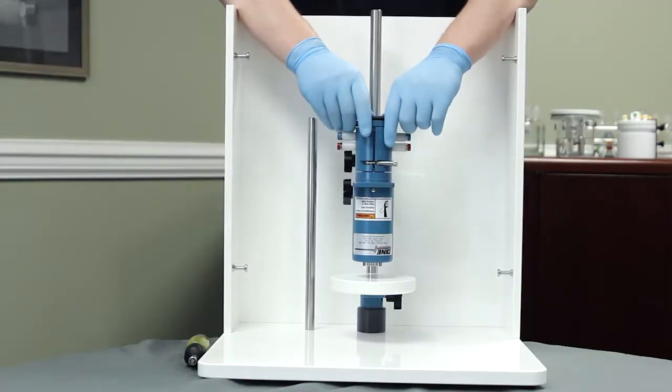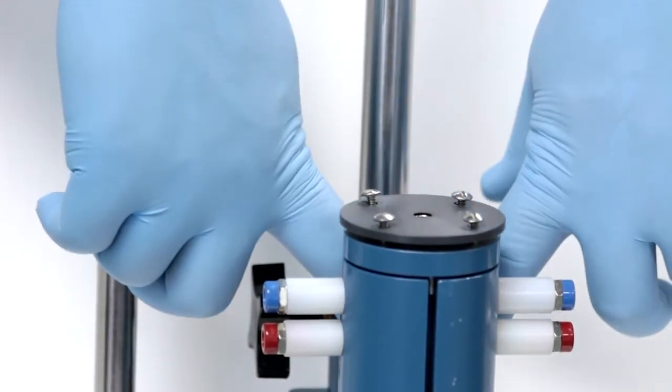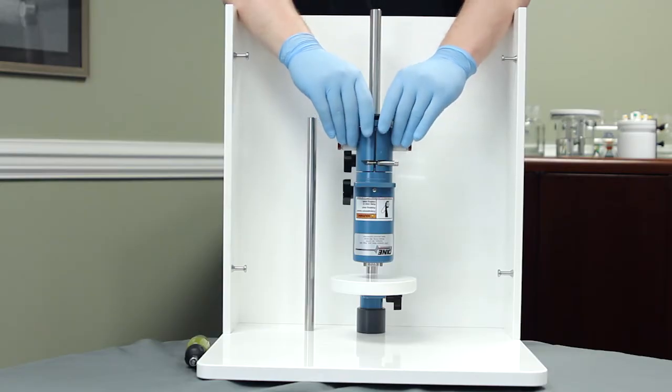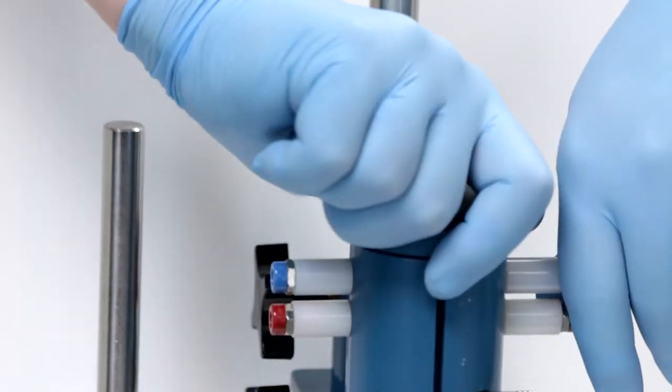Once these are loosened with the screwdriver, the lower bearing assembly will be removed from the base of the motor. You may need to use some back and forth gentle motion to release the lower bearing assembly.